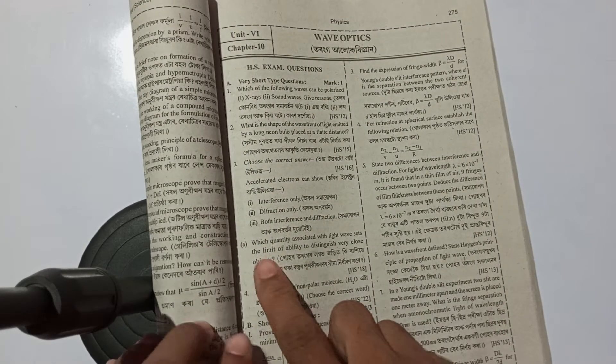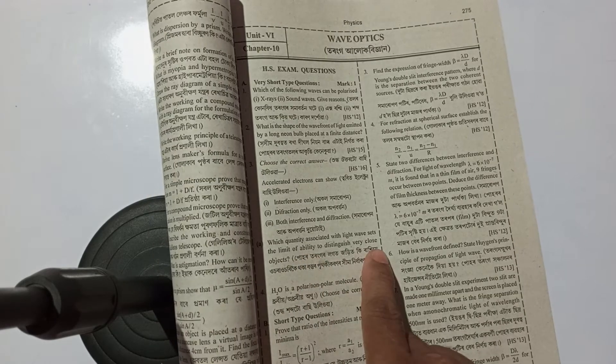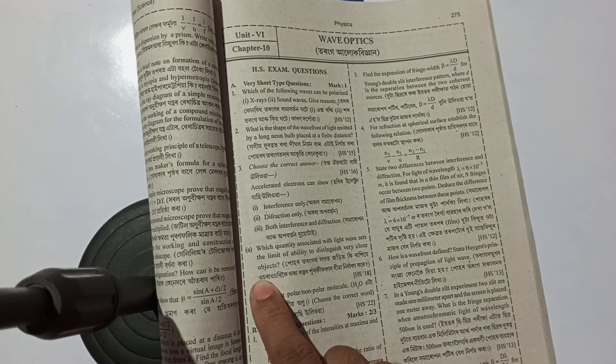The next question is: which quantity associated with light sets the limit of ability to distinguish very close objects? The answer is wavelength.